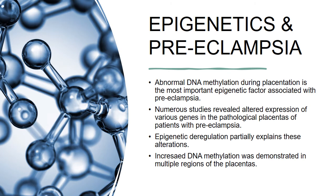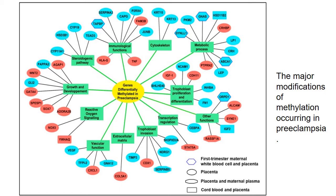Epigenetics and preeclampsia: Abnormal DNA methylation during placentation is the most important epigenetic factor associated with preeclampsia. Numerous studies revealed altered expression of various genes in the pathological placentas of patients with preeclampsia. Epigenetic deregulation partially explains these alterations. Increased DNA methylation was demonstrated in multiple regions of the placentas of patients with preeclampsia. The following image shows major modifications of methylation occurring in preeclampsia. The main pathways are shown in green boxes. The significant alterations in methylation may be associated either with increased or decreased gene expression — so either hypermethylated, represented by the red circles, or hypomethylated, represented by the blue.